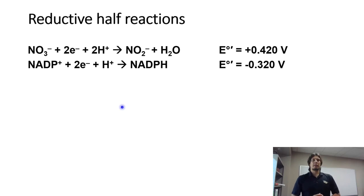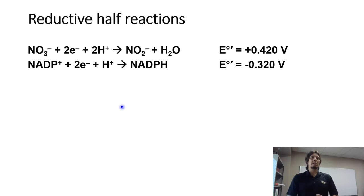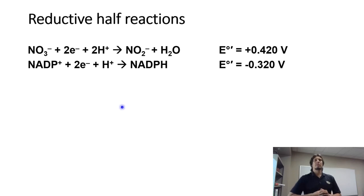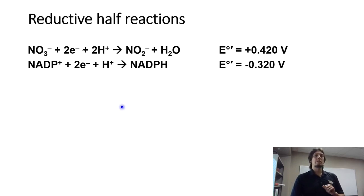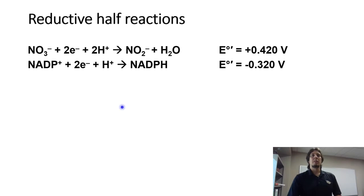We have two reductive half reactions. The first is the reduction of nitrate to form nitrite, with two protons involved and water formed as a product. The second involves NADP+, a common cofactor and electron transfer molecule found in biological reactions. NADP+ can accept two electrons and a proton to form NADPH. Both reductive half reactions are shown here.